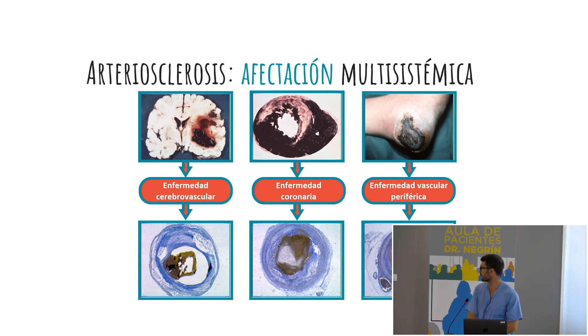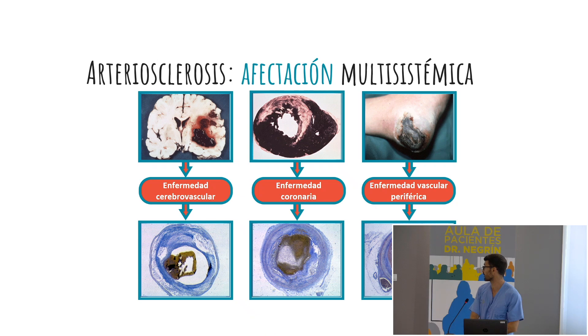Si pasa en el cerebro, tenemos un ictus. Si pasa en el corazón, enfermedad coronaria. Y si pasa en una pierna, enfermedad vascular periférica. Esos son los nombres que les ponen los médicos.